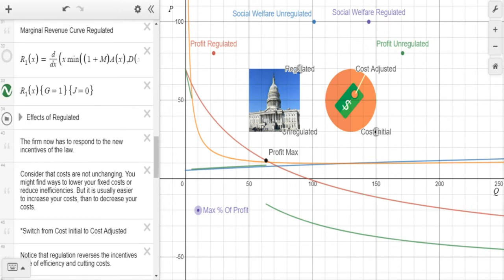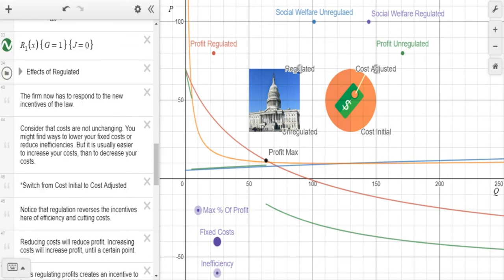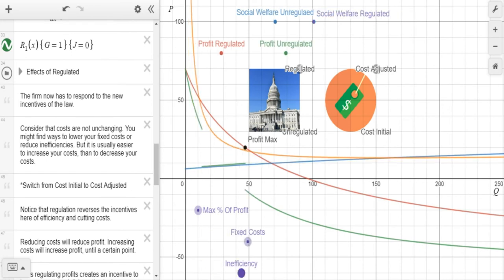Now that we have used these regulations, the firm has to respond to the new incentives of the law. We have to consider that costs are not unchanging. You can find ways to lower your fixed costs or reduce inefficiencies, but it is usually easier to increase your costs than to decrease your costs. So we're going to switch from our initial costs to the ability to adjust our costs. Right here we have two additional sliders: a fixed cost slider and an inefficiency slider. For example, let's increase our costs a little bit and our inefficiency.